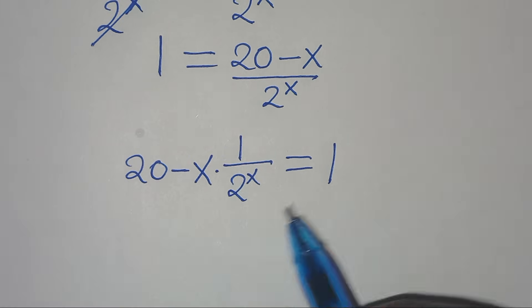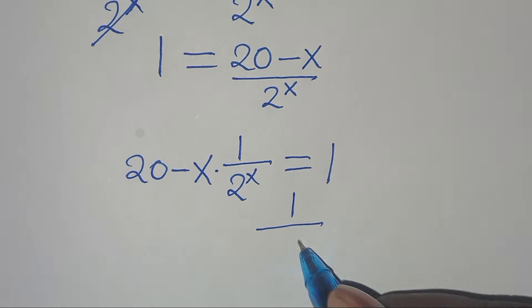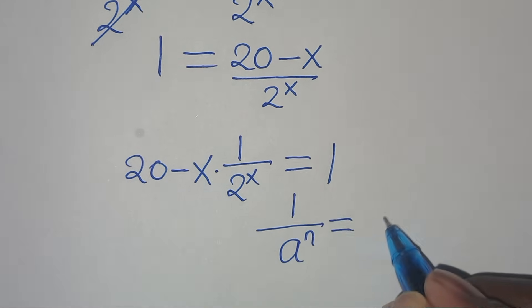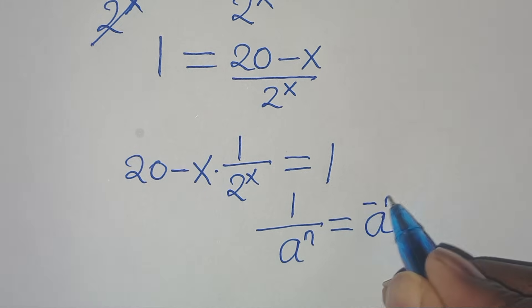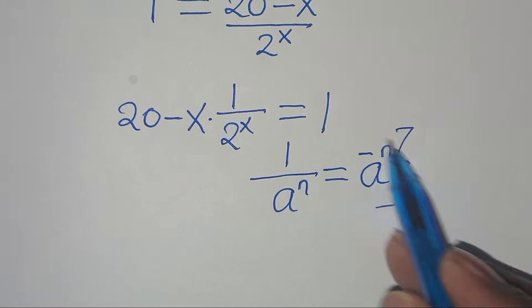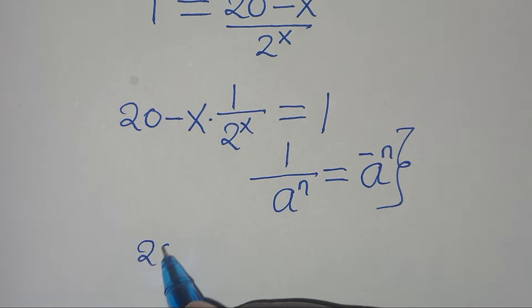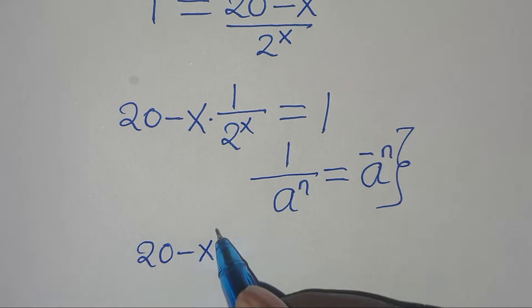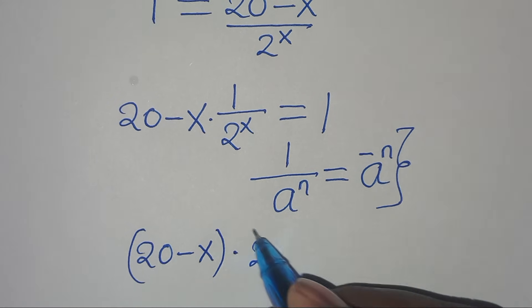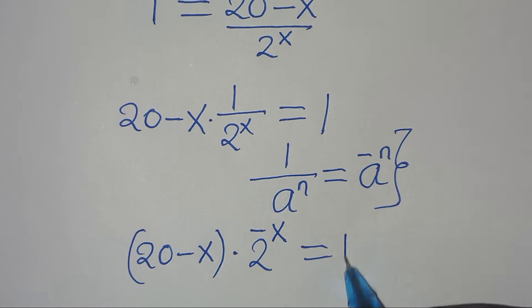Now, 1 over 2 to the power of x is in the form of 1 over a to the power of n, which can be expressed as a to the power of minus n. Applying this property, we have (20 minus x) multiplied by 2 to the power of minus x, equals 1.